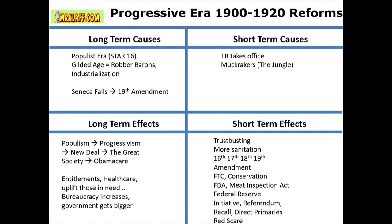The long-term effect of the Progressive Era: look at that link — Populism to Progressivism to the New Deal to the Great Society to Obamacare. We're talking about bureaucracy increasing in size and government trying to help those in need, enhancing voting rights and consumer rights. I wanted to use these examples so students understand what short-term and long-term really means. Seeing it in a grid like this is helpful.